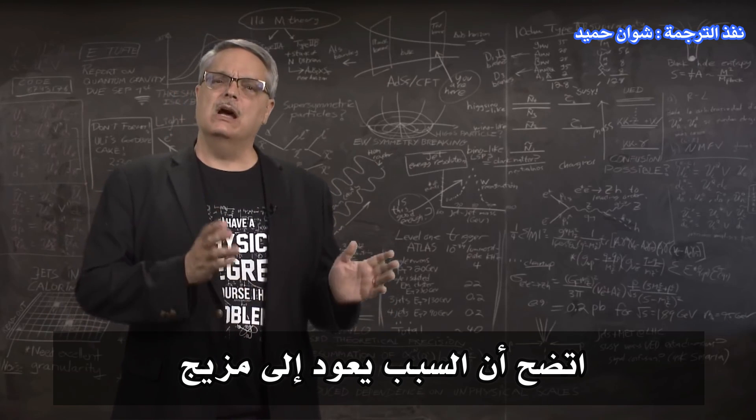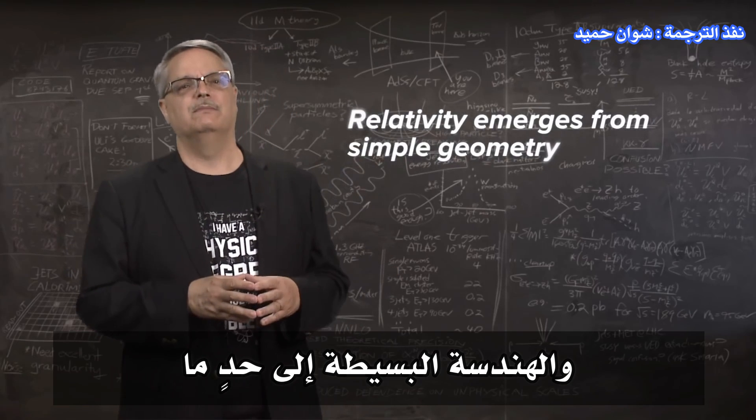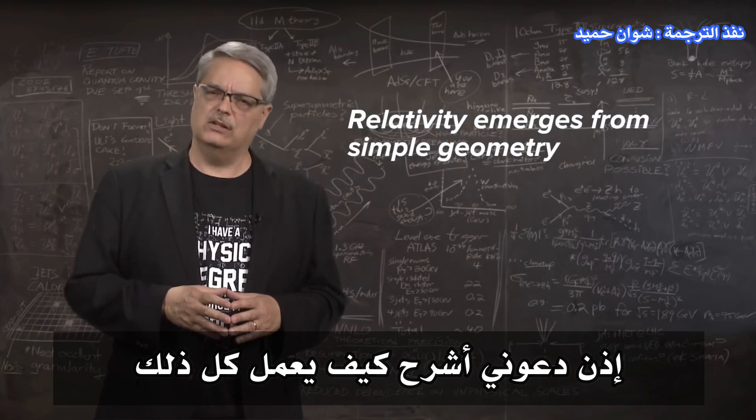Just why is it that you can't go faster than the speed of light? It turns out to be due to a combination of a deep and fundamental property of the universe and fairly simple geometry.